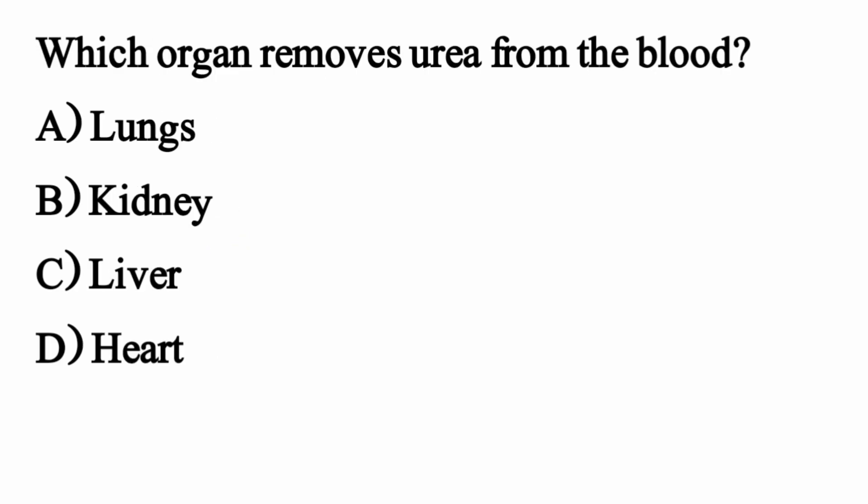Which organ removes urea from the blood? The right option is Option B — Kidney.